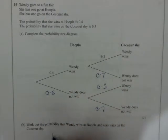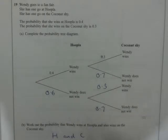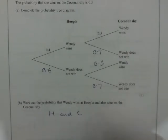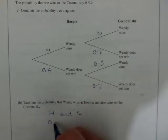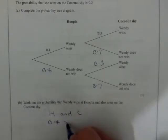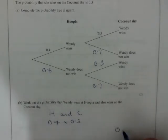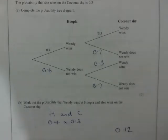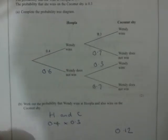It's hoopla and coconut. And we should know in probability that the 'and' rule means multiply, so it's 0.4 times 0.3, and that gives me 0.12 as my answer. I see four marks there.